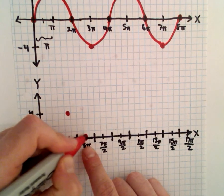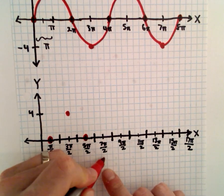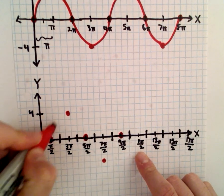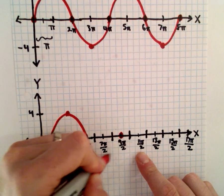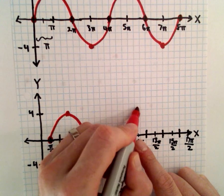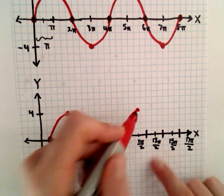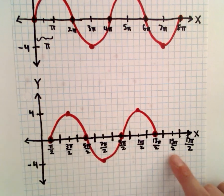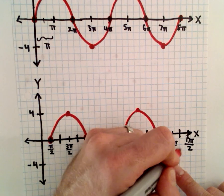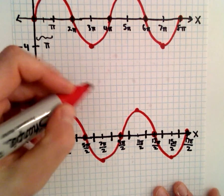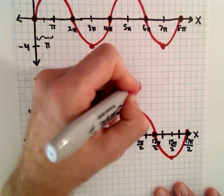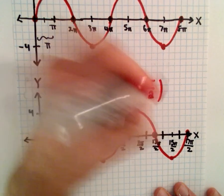At 7 pi over 2, I'm going to be at negative 4. At 9 pi over 2, I'll be back at 0. That'll be 1 period. 11 pi over 2, we're going to be sitting back up at positive 4. 13 pi over 2, we're going to be back at negative 4. And at 17 pi over 2, we're going to be back at 0. And there is 4 times sine of 1 half times x minus pi over 2.